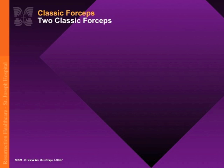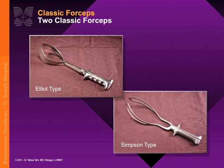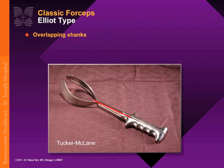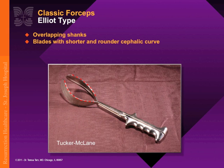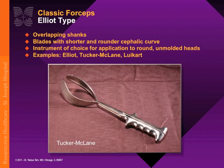There are two classic forceps used in obstetrics today: the Elliott type and the Simpson type. The Elliott type forceps have overlapping shanks, shorter blades, and shorter, rounder cephalic curves. The most popular Elliott modification is the Tucker McLean, which accommodates round unmolded heads. The Lucard forceps is another example.